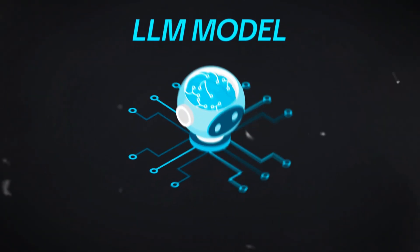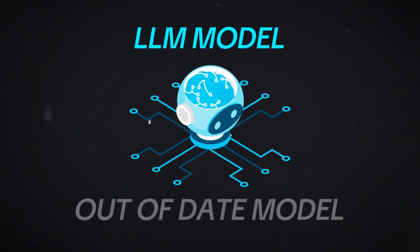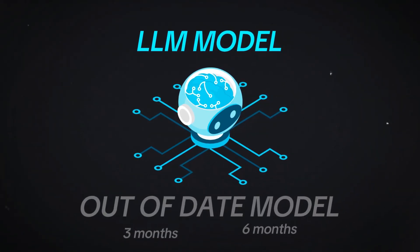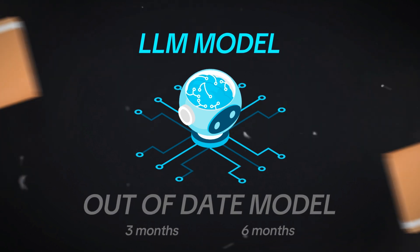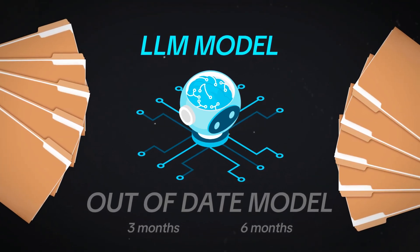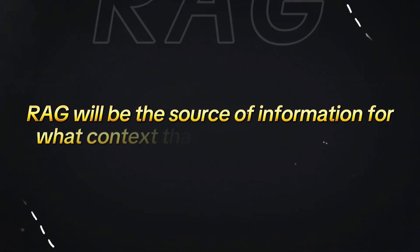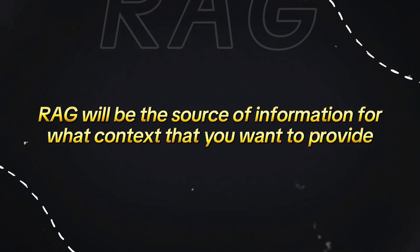Now let's understand why we should use RAG. Generally, when you use an LLM model, it may be out of date by a couple of months or a quarter. Your model needs to be retrained every time for new data. But by using RAG, it becomes your source of truth and source of information for the context you want to provide.